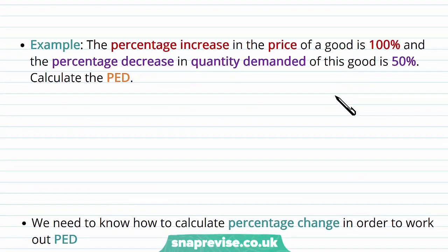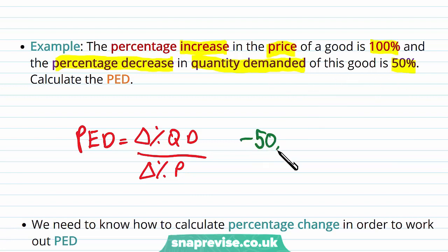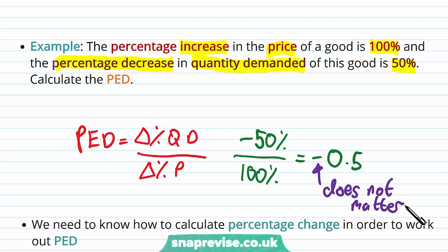Let's work through an example. The percentage increase in the price of a good is 100%, and the percentage decrease in quantity demanded of this good is 50%, so that's minus 50% as it's a decrease. Now let's go ahead and calculate the PED. Our equation is the percentage change of quantity demanded, QD, over the percentage change of price. Our quantity reduced by 50%, so we have minus 50%, and that is going to be over positive 100% because the price increased by 100%. What's that equal to? That's equal to minus 0.5. Now, like I said earlier, that minus sign doesn't matter, as PED is going to be a positive number.